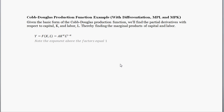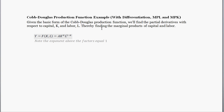Hello and welcome. With this example, what we're going to do is start off with a Cobb-Douglas production function — a simple form of it. We're going to take the derivative of it with respect to its two factors: capital K and labor L. Thereby we're going to find the marginal product of capital and the marginal product of labor.